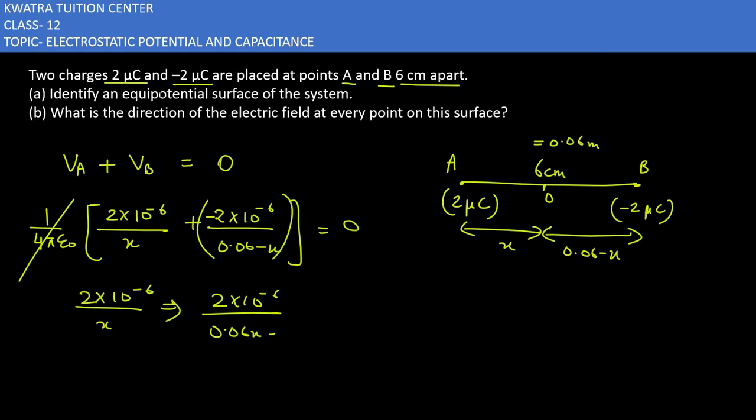Now what we have left is 1/x equals 1/(0.06 - x). Cross multiplying, 0.06 - x equals x. If x goes to the other side with the minus sign, it will become 2x.